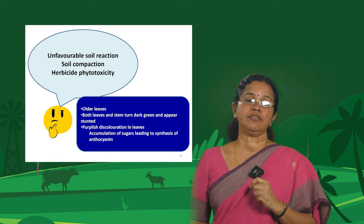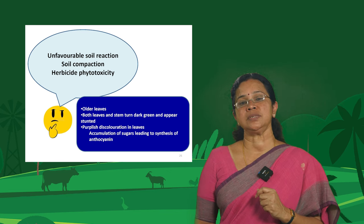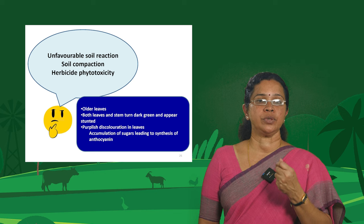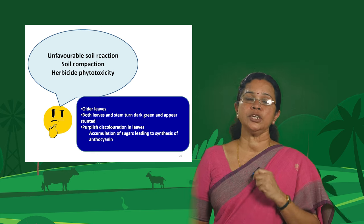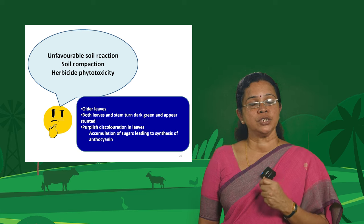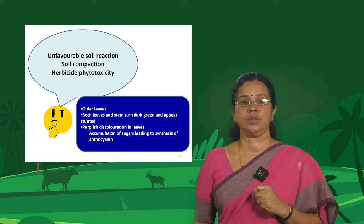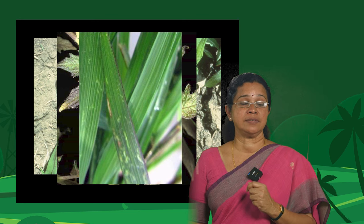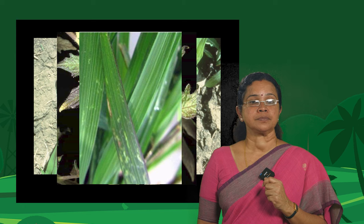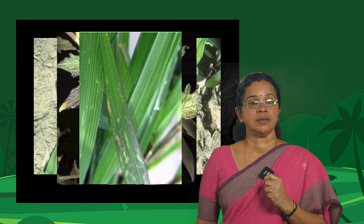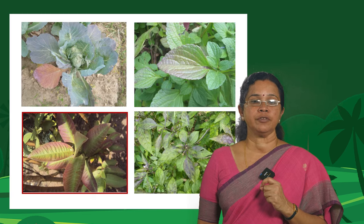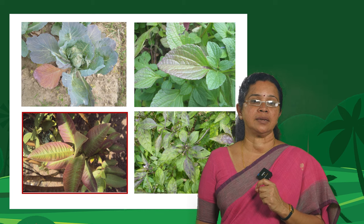Why do sugars accumulate in the leaf? Carbohydrate metabolism is affected, so carbohydrate formed through photosynthesis cannot be translocated from the leaf to other parts. This leads to sugar accumulation and synthesis of anthocyanin, giving typical coloration to the leaves. You can very clearly see that purplish coloration on the leaves and very dark green leaves — and in different crops, that purplish discoloration typical of phosphorus deficiency.